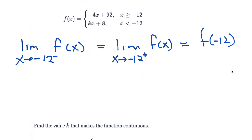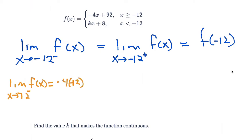So in here, what's the limit as x goes towards negative 12 from the left-hand side of f of x? That is negative 4 times negative 12 — this should be negative 12 in here — negative 12 plus 92. If I take negative 4 times negative 12 plus 92, I end up with 140.